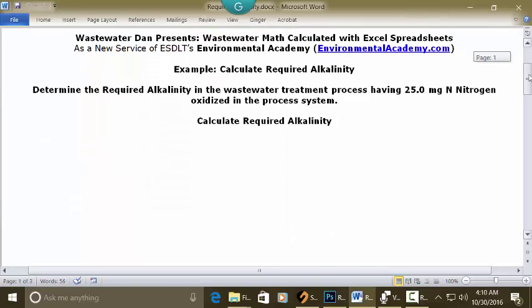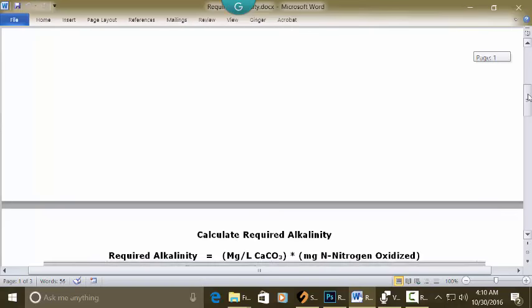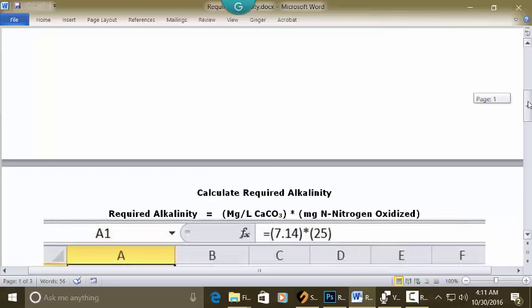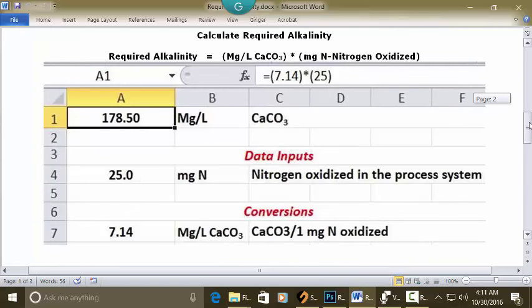So this is a simple problem where we take the milligrams of nitrogen oxidized and multiply it by the conversion factor to calcium carbonate in milligrams per liter. We have to know the standard conversion factor in order to solve it, which is 7.14.